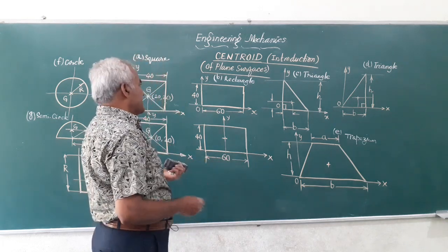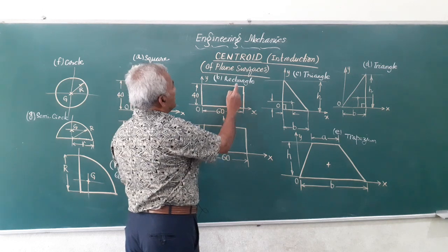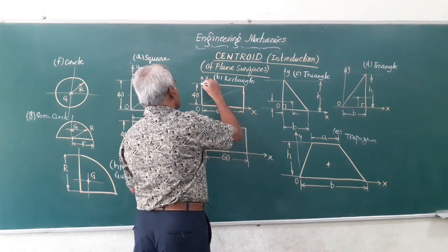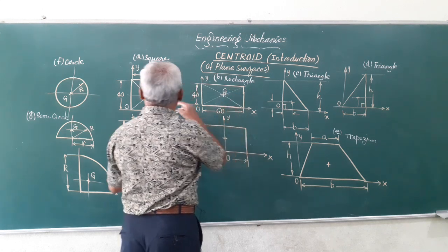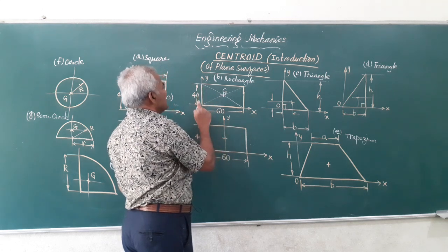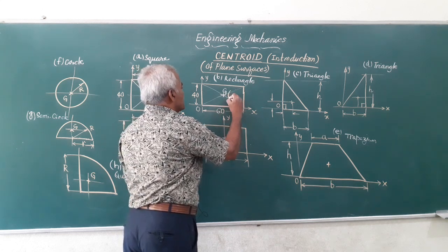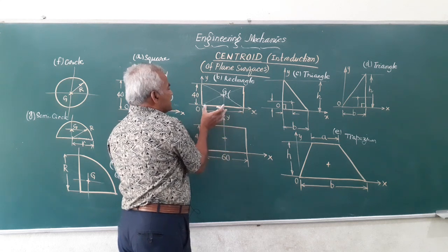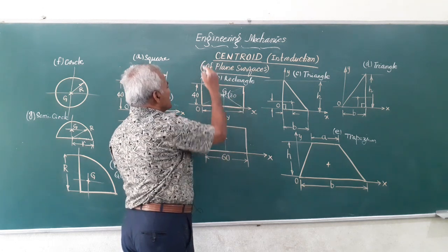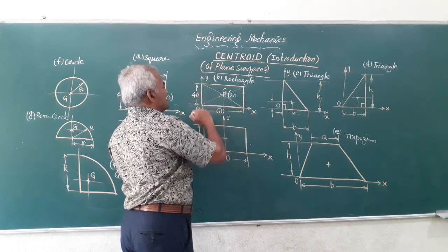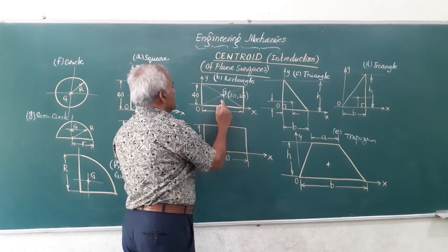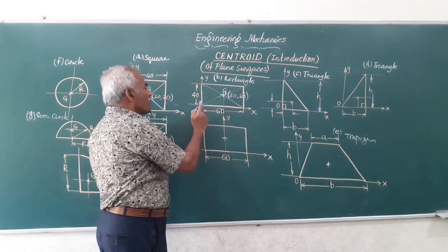We follow the same procedure for a rectangle. Suppose I want to locate the centroid of a rectangle with dimensions 60 by 40. Join the diagonals — they meet at a common point G. Taking O as the origin at the bottom left, the X-bar is 60 divided by 2, which is 30 mm, and Y-bar is 40 divided by 2, which is 20 mm. The centroid lies at 30 mm from the Y axis and 20 mm from the X axis.